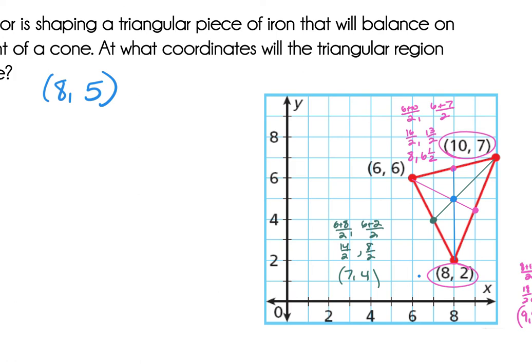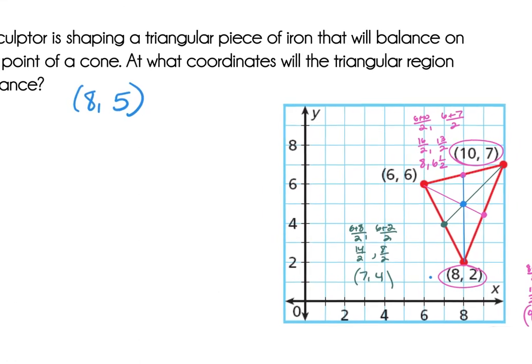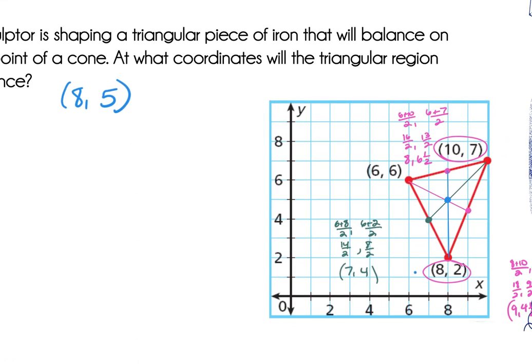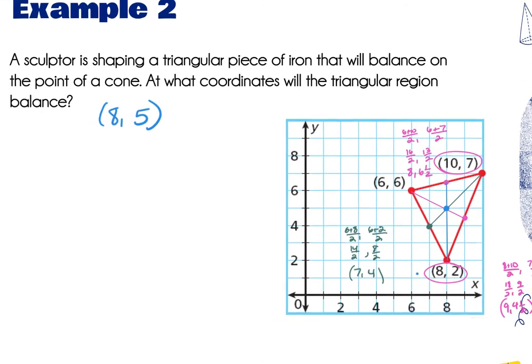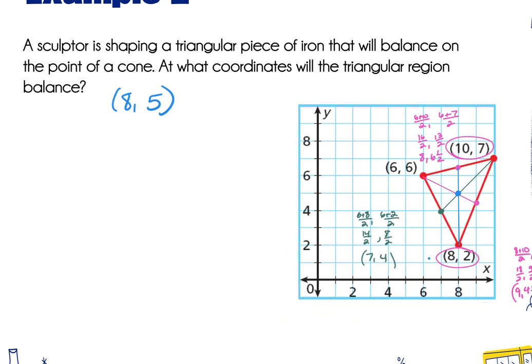They meet at (8, 5), which is the centroid — the point of gravity. You could also find it by drawing just two medians since you know they all meet at the same point, which eliminates work. Any questions on medians, centroids, or the centroid theorem?